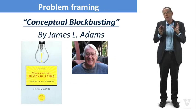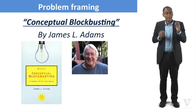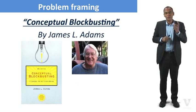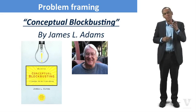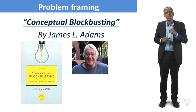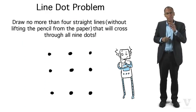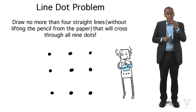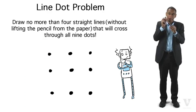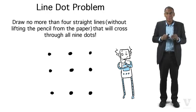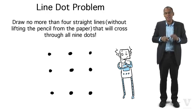Let's talk about problem framing. A good friend of mine, Jim Adams, wrote a book — I think it's one of the greatest books on creativity ever written — called Conceptual Blockbusting. In that book, he's got a problem called the line-dot problem. You have nine dots, and your job is to draw no more than four straight lines without lifting the pencil from the paper that will cross through all nine dots. Grab a piece of paper, put nine dots there, and see if you can do it.